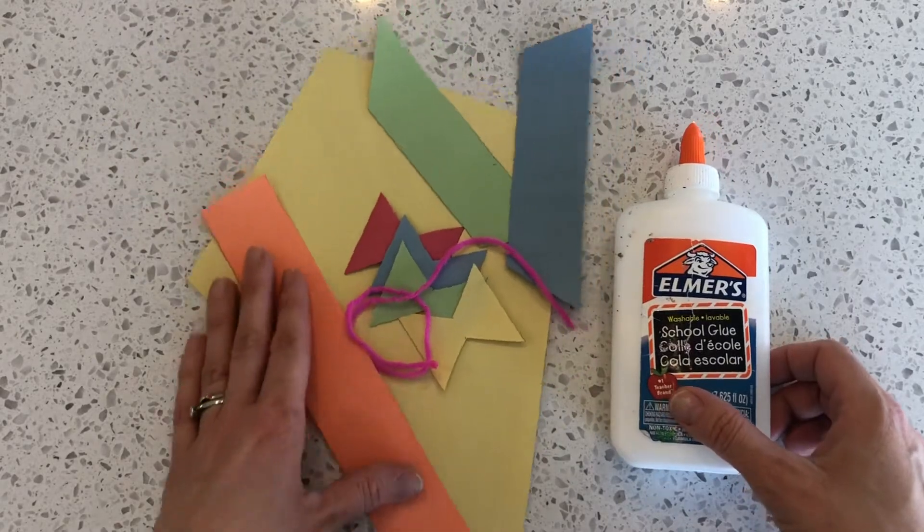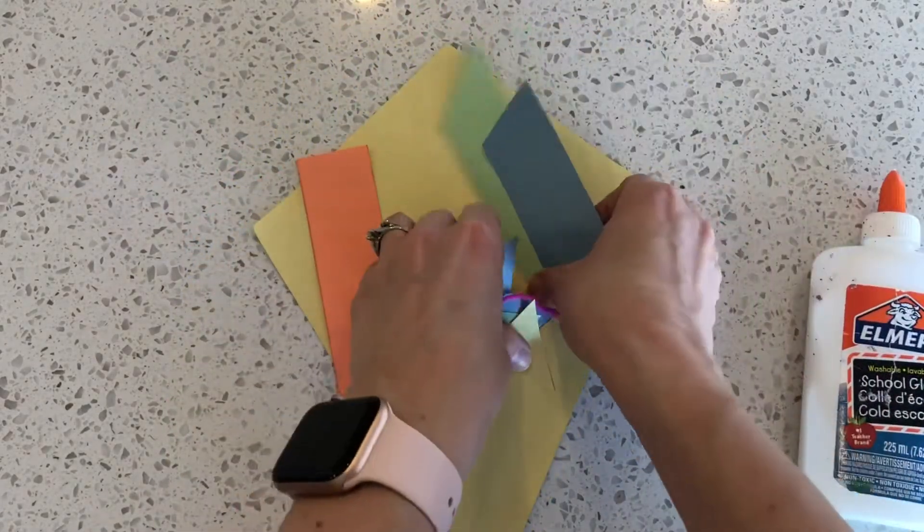For this craft you'll need your letter K kite cutouts and some glue.